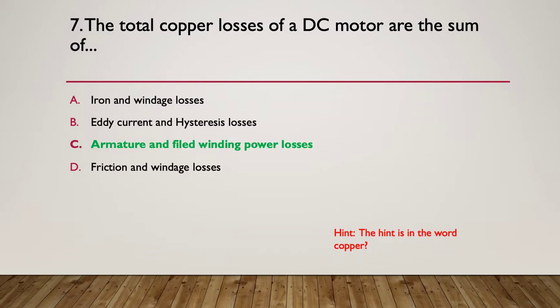So the answer at this time is armature and field windings. Iron, no copper involved. Windage, no copper involved. Eddy currents are around steel. Hysteresis losses are around steel. Friction is around the bearings. Windage is around the rotor rotating through the air. So just by process of elimination, A, B and D have nothing to do with copper. Armature is made of copper wire and the field winding is made of copper wire. So obviously those are the copper losses.